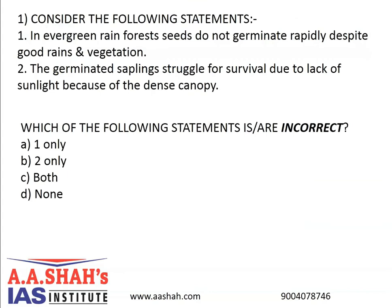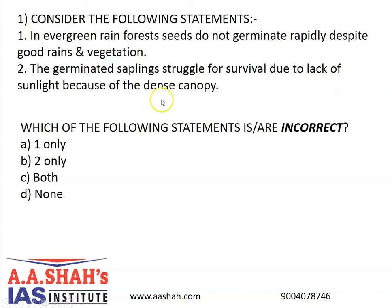Question number 1. Consider the following statements. Number 1: In evergreen rainforest, seeds do not germinate rapidly despite good rains and vegetation. Number 2: The germinated saplings struggle for survival due to lack of sunlight because of the dense canopy. Which of the following statements is or are incorrect?